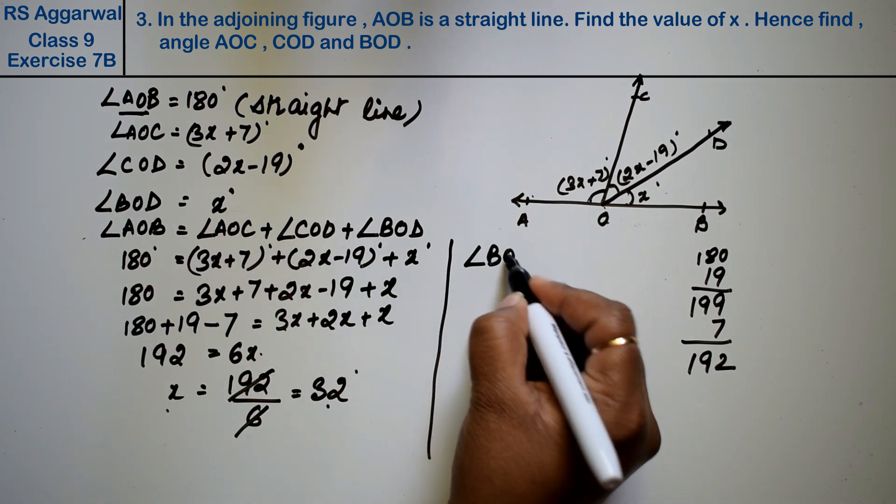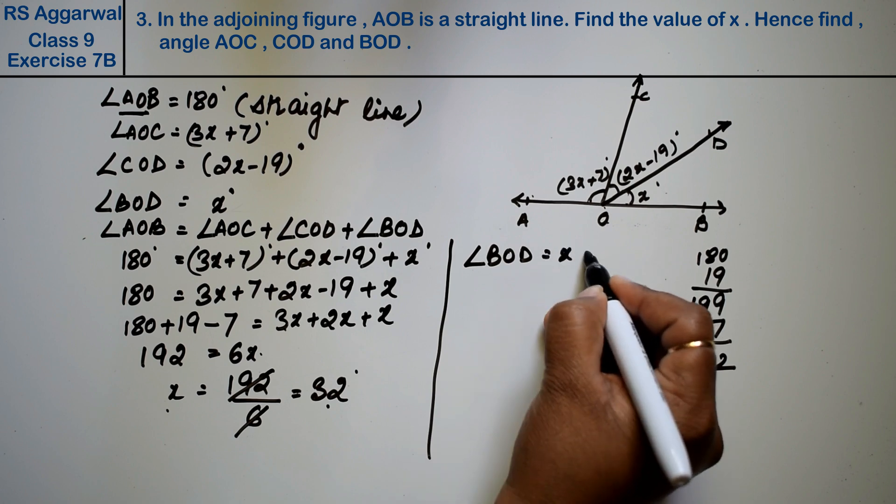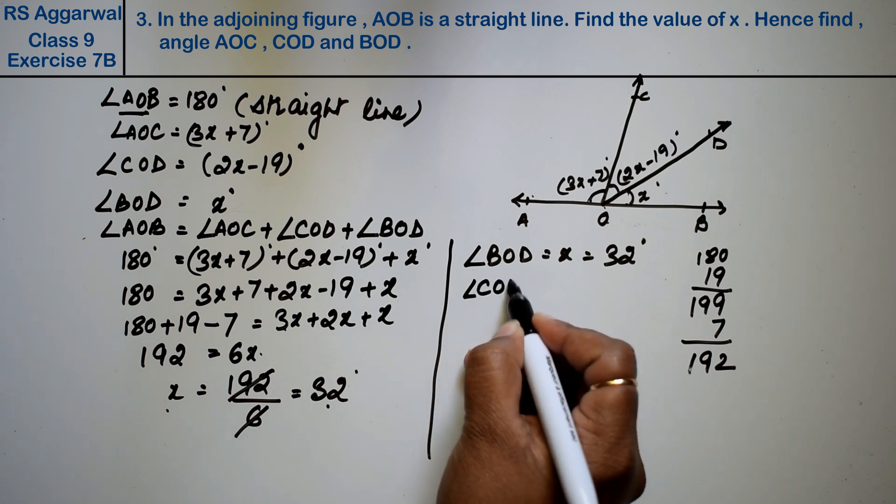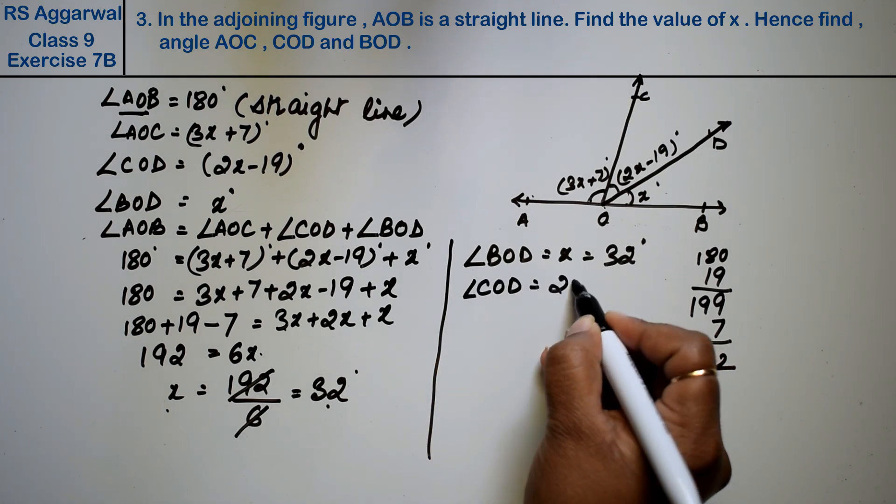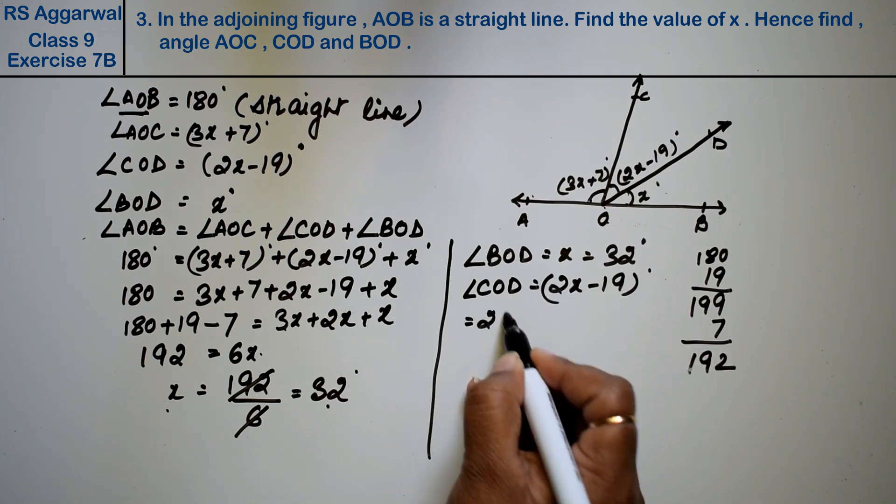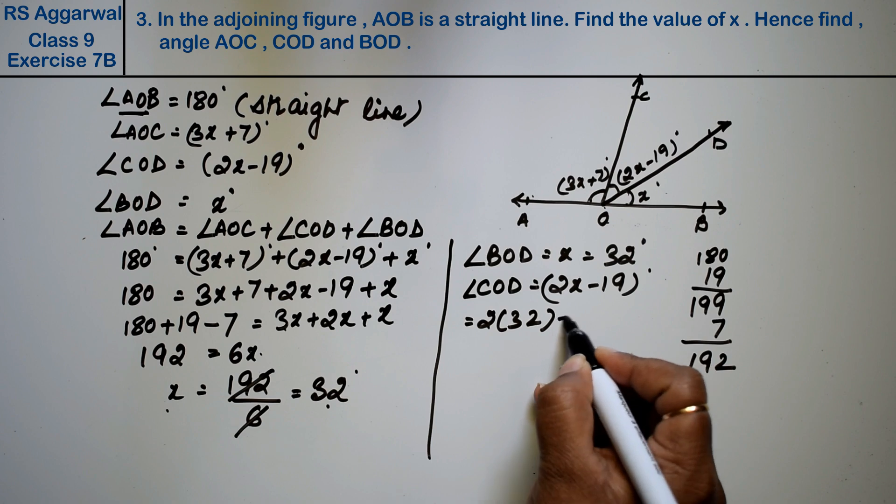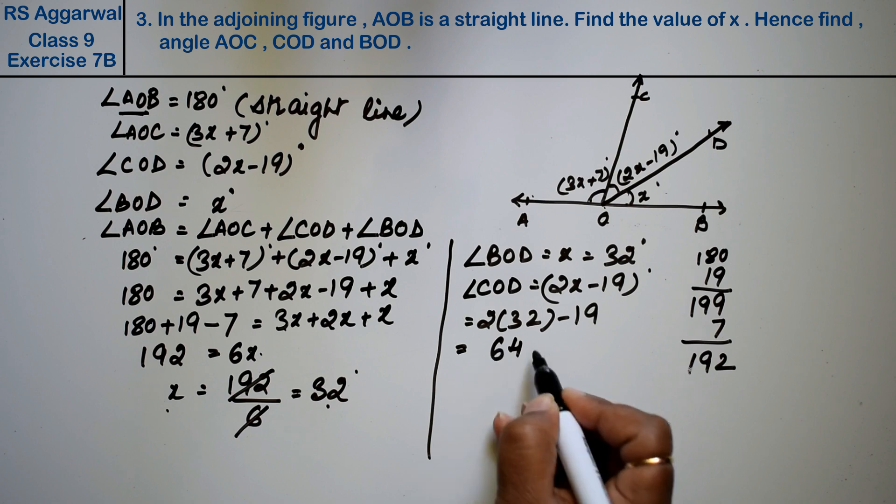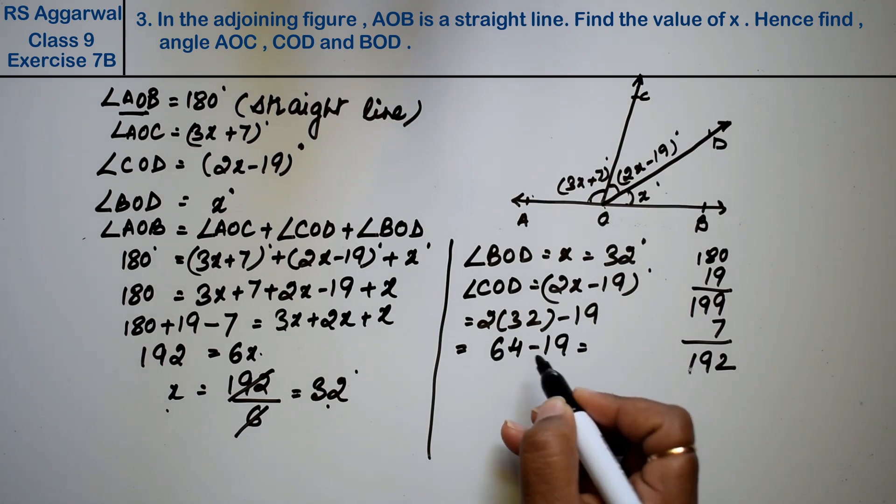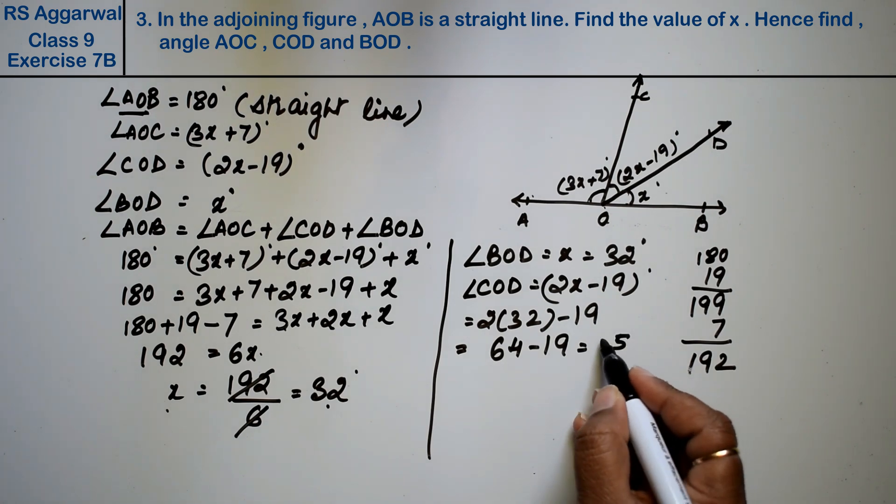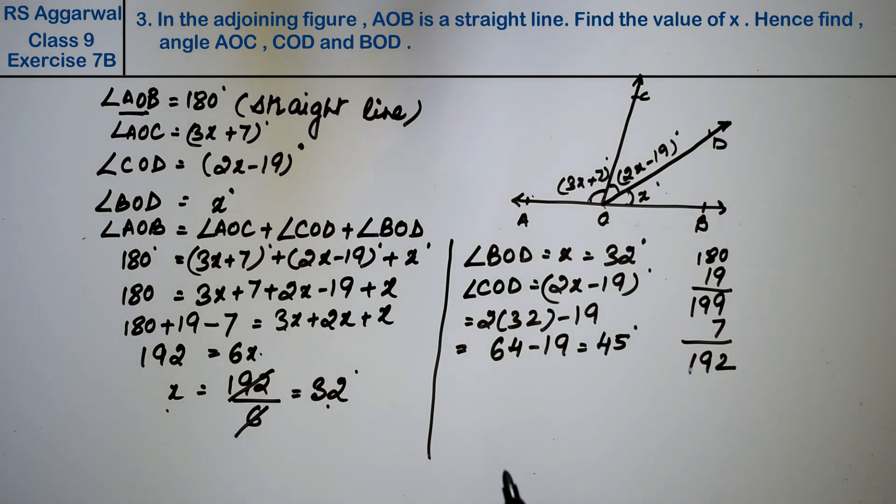Now angle COD, that is 2x minus 19 degrees. In place of x put its value, 2 times 32 minus 19. So it becomes 2 twos are 4, 2 threes are 6, minus 19. So it becomes 14 minus 9 is 5, 5 minus 1 is 4, 45 degrees.